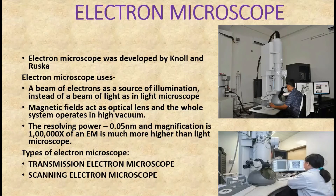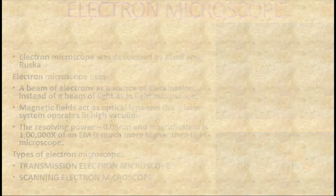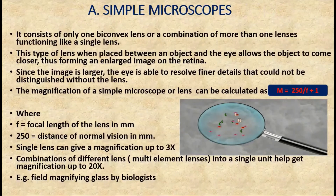We should note that each type of microscope possesses a definite limit of visibility. For instance, in the light microscope using 1,000x magnification, the visible limit is about 0.2 micrometers, while in the electron microscope the lower visible limit is about 0.4 nanometers.